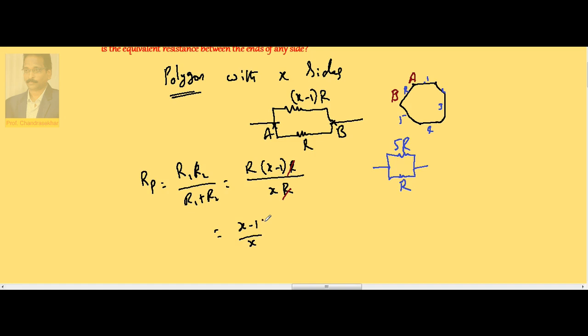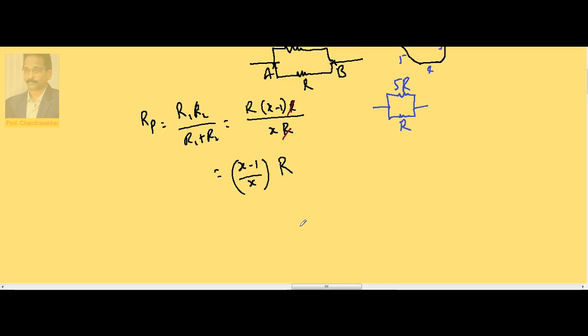The effective resistance across one side: in the present problem, X is given as 9, so Req becomes (9 minus 1) by 9 into R. Since X is 9 and one side value is given as R, 8 by 9 R is the effective resistance.